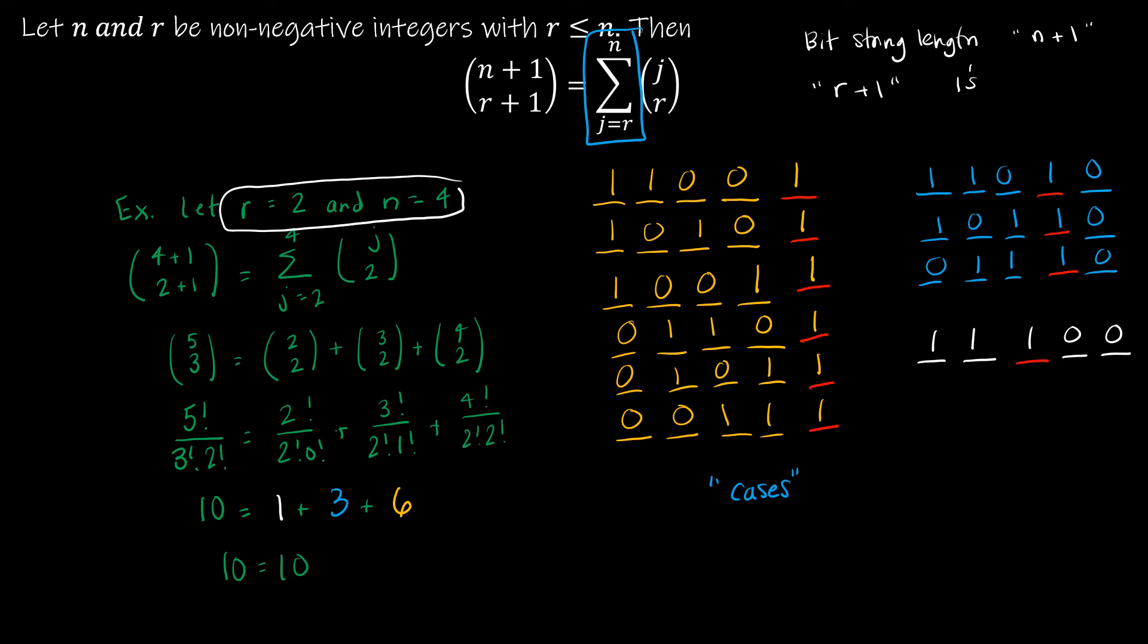And really, this is a matter of cases. So we know if there are r plus 1 ones, then this value, the very furthest to the right.